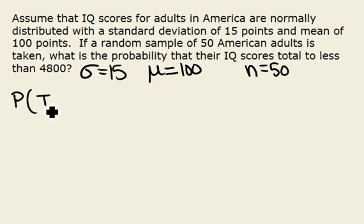We want to know the probability that their total, if we added up all their IQ scores, would be less than 4800.